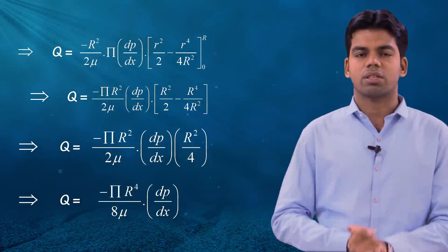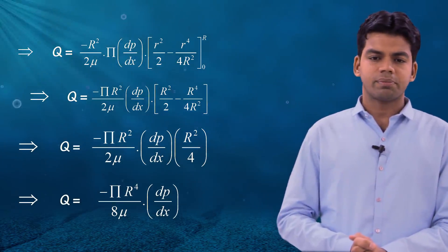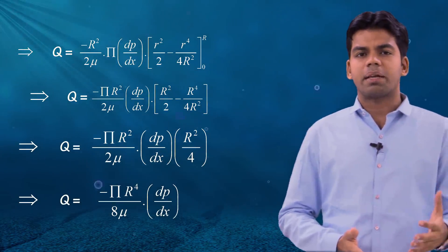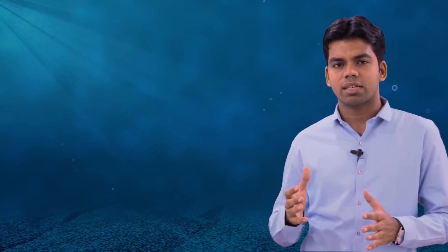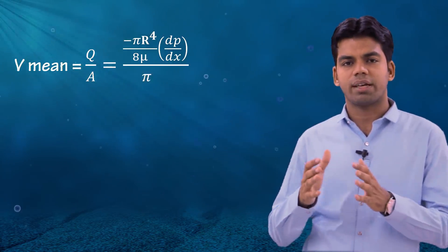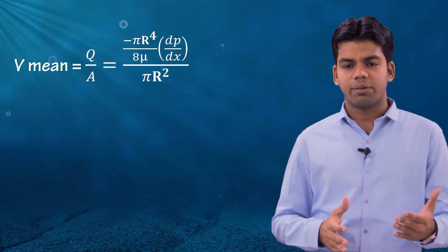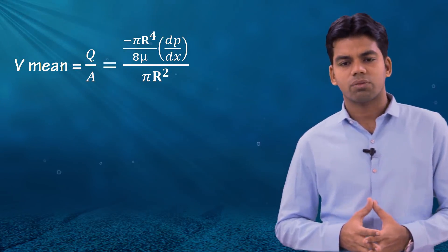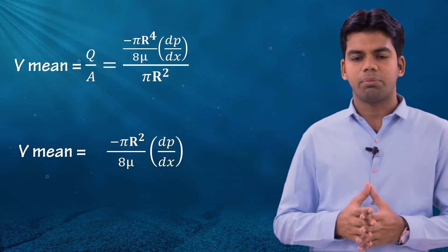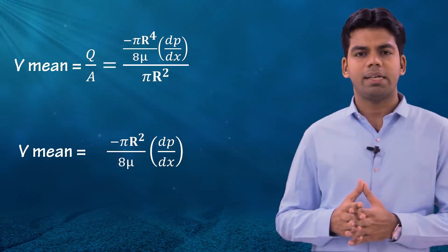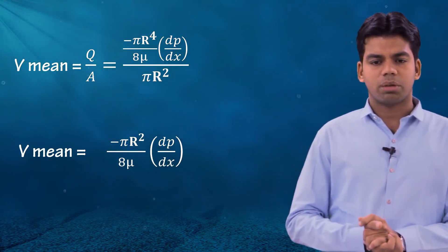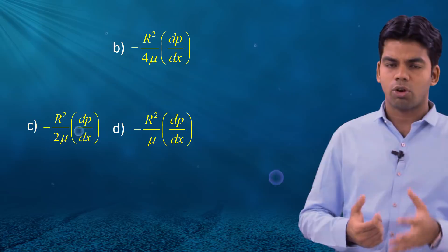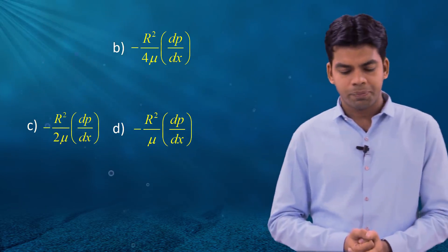So the total discharge is Q = −(πR⁴/8μ)(dp/dx). To find the mean velocity, we divide by the cross-sectional area πR²: V_mean = −(R²/8μ)(dp/dx). This is the answer — option (a). But as you can see, this process is very lengthy, involving integration and limit substitution, which takes much of your time.